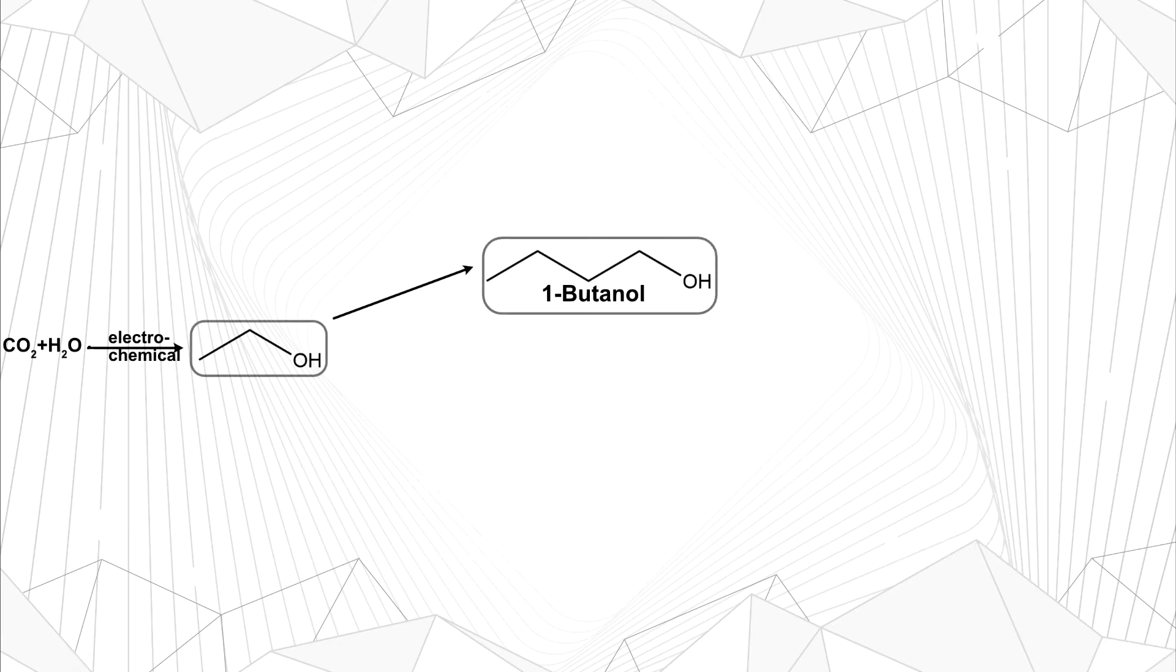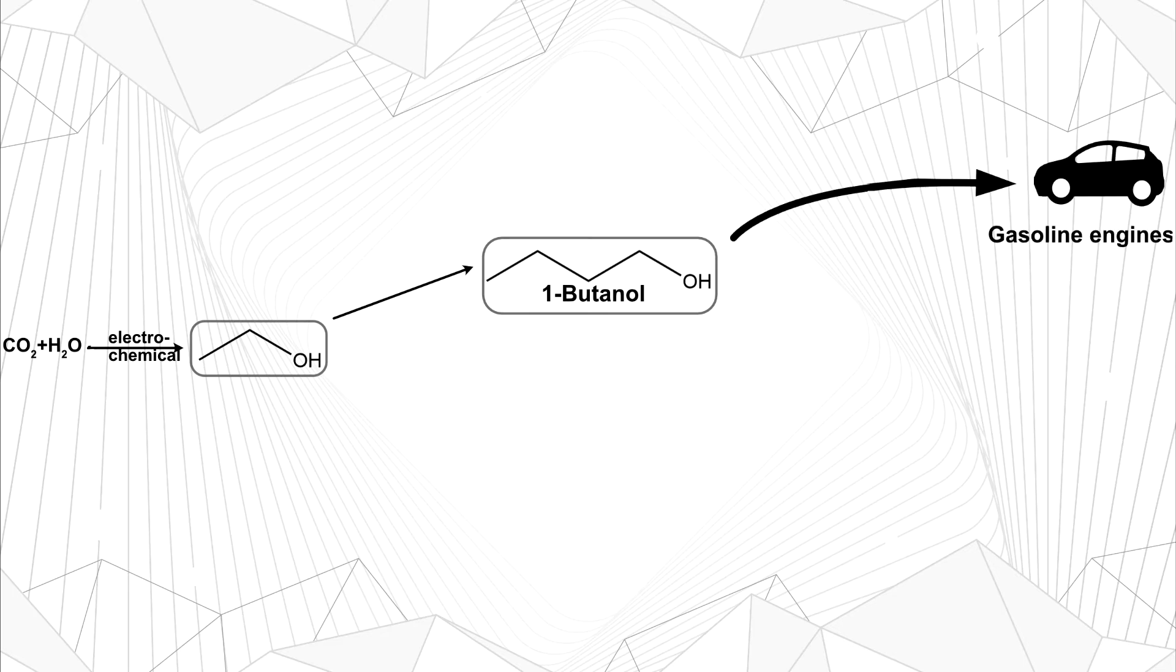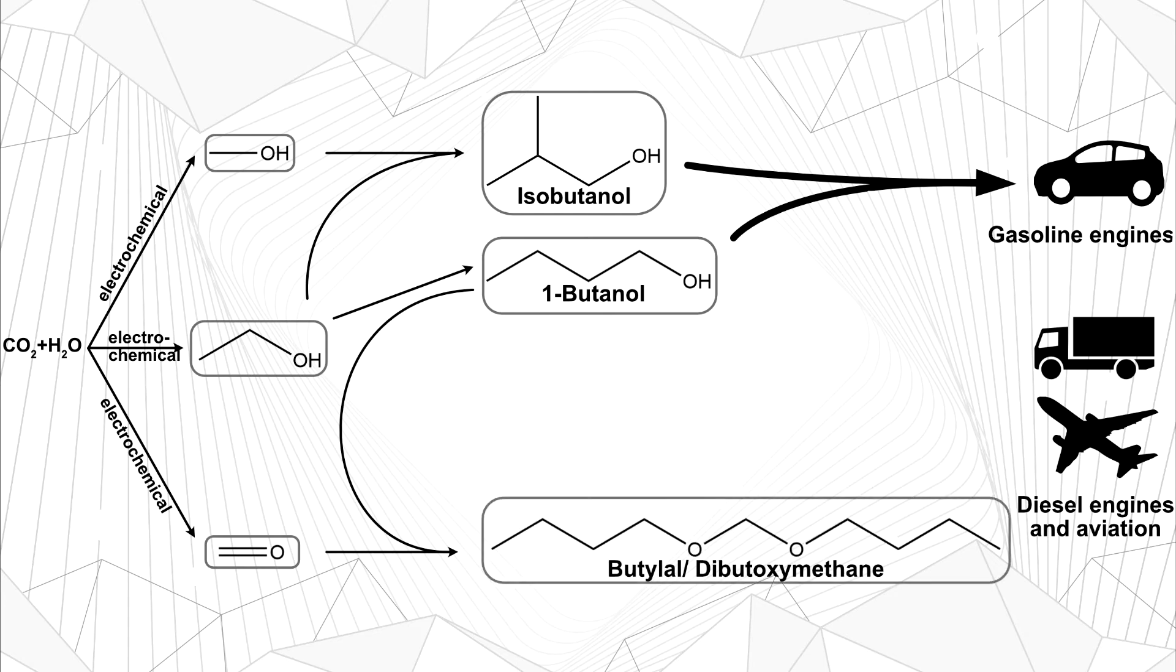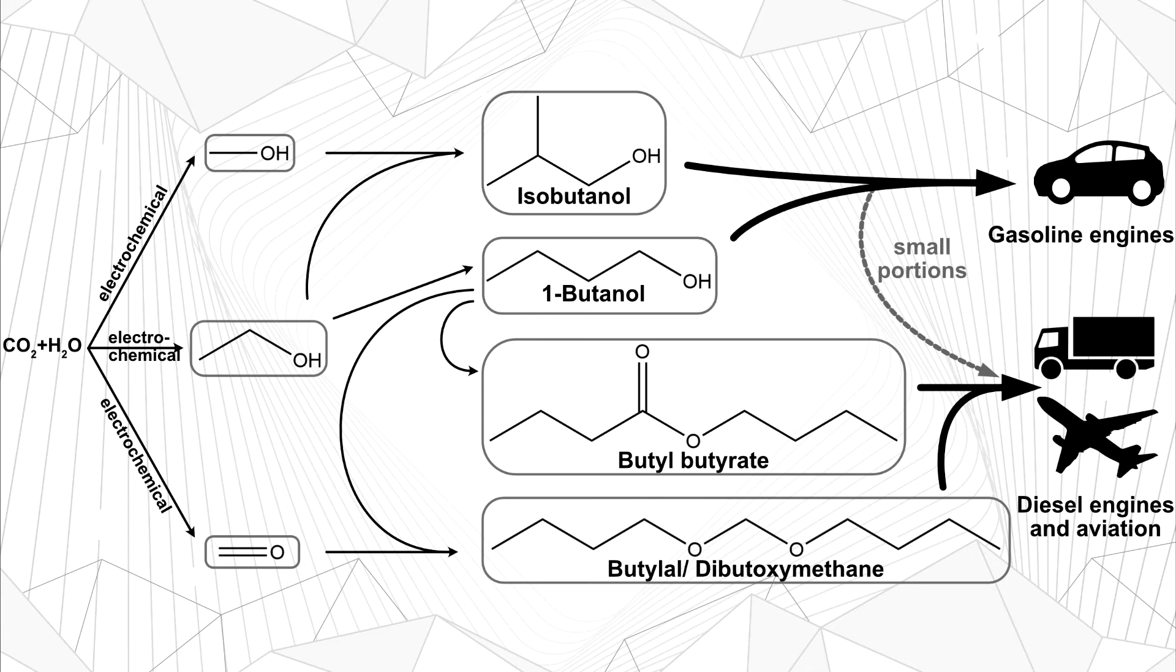So after these steps we will arrive at butanol, specifically 1-butanol, which is suitable as fuel in gasoline engines. We can also produce isobutanol, which is made up of the same number of different atoms, just connected in a different way. The process here is very similar. The only difference is that rather than combining two ethanol molecules, we combine one ethanol into two methanol molecules. These two isomers of butanol have slightly different properties, and for use as fuel it likely makes sense to use a mixture of both. For diesel engines and aviation fuel, we can further combine butanol with formaldehyde to form butylol, or di-butoxymethane. We can also combine butanol with its carboxylic acid to form butyl butyrate. A mixture of these two components as well as small amounts of butanol can then serve as fuel for these applications.